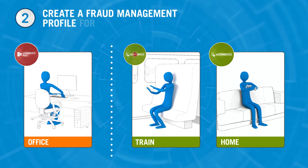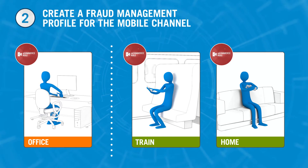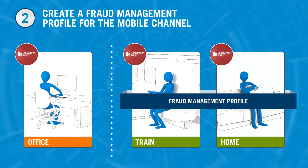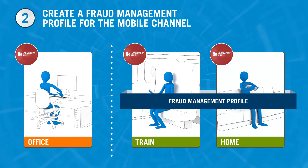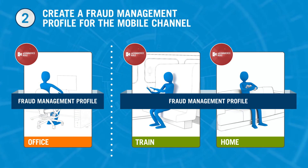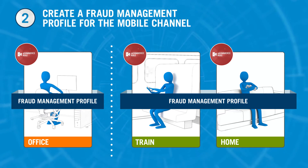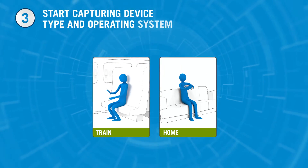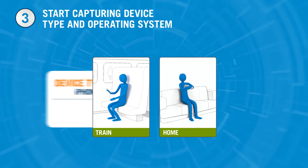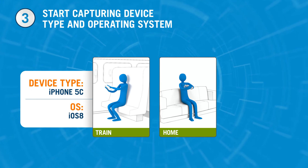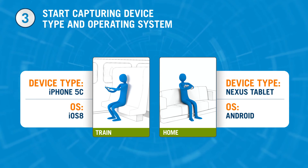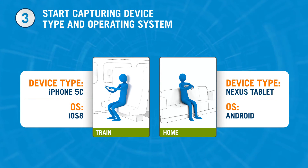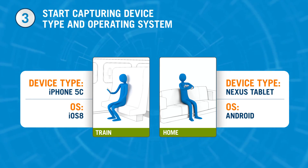Secondly, you need to create a fraud management profile for the mobile channel, even if at first the rules associated with it are identical to your e-commerce rules. Thirdly, you need to start capturing the device type and the operating system that your mobile orders are submitted on, even if you don't create any rules based on this information at first.